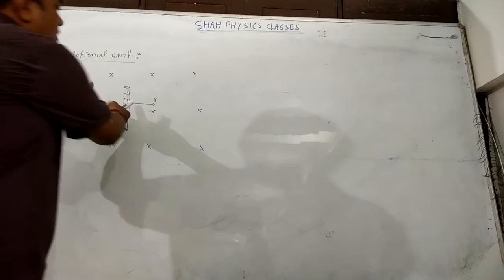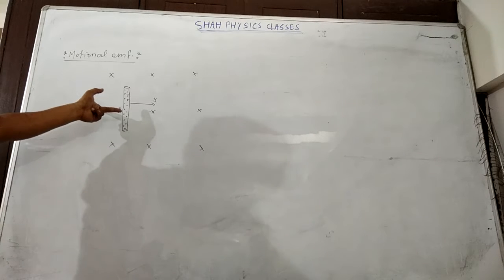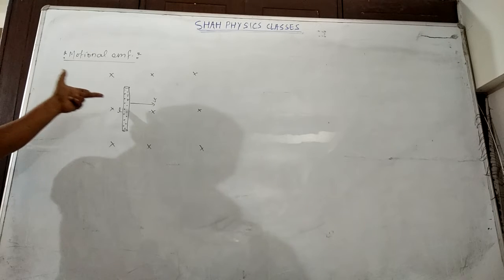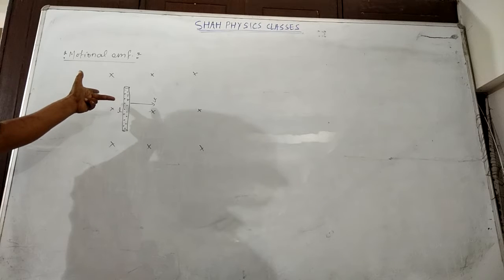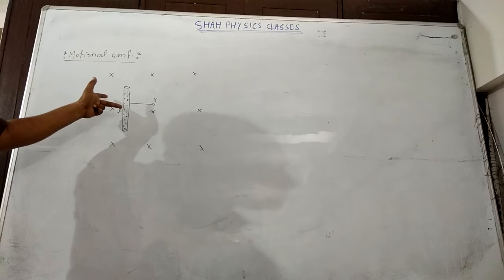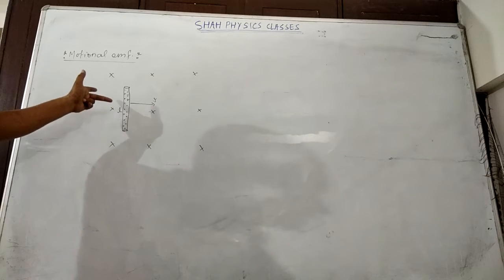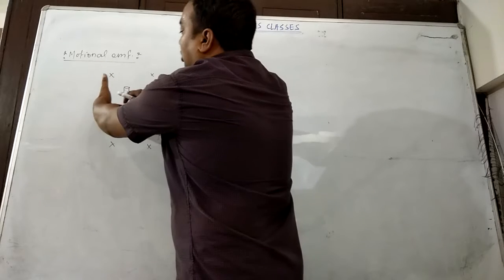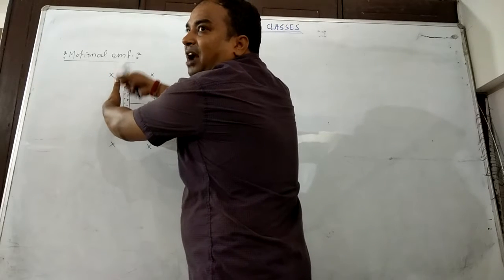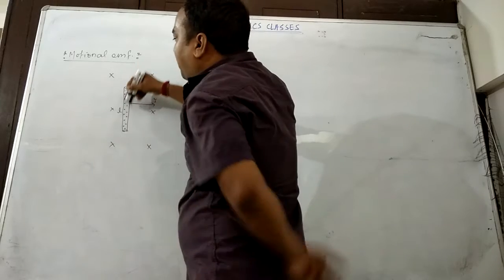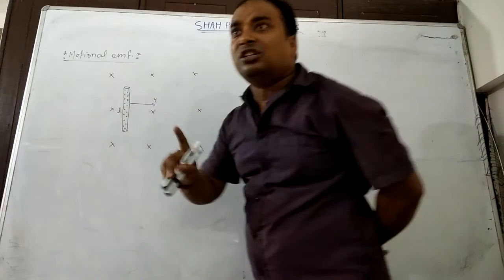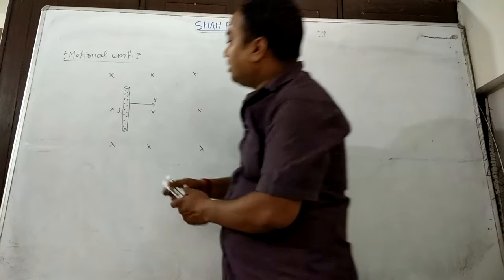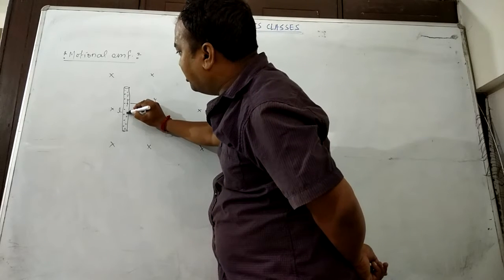The magnetic field is inside and the motion of the charge particle is in this direction. The charge particle is negative. So consider it as a positive charge particle first — on the positive charge particle, force will be applied along the thumb, so force will be applied in the upward direction. Then on the negative charge particle, force will be in the downward direction. So all electrons will move in this direction.